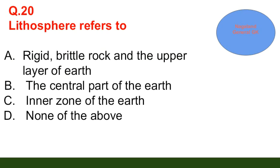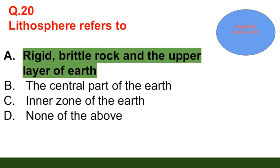Question number 20: Lithosphere refers to — option A: rigid brittle rock and upper layer of earth; option B: the central part of the earth; option C: inner zone of the earth; option D: none of the above. The correct answer is option A — rigid brittle rock and the upper layer of earth.